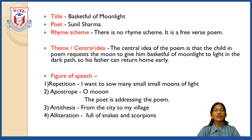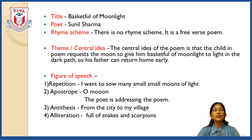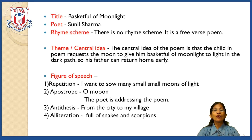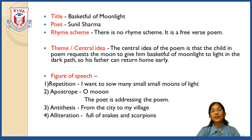Now, figures of speech. There are four figures of speech in this poem, but in the exam you should write only one. The first figure of speech is repetition. For example: 'I want to see many small, small moons of light' — the word 'small' is repeated, making it repetition.